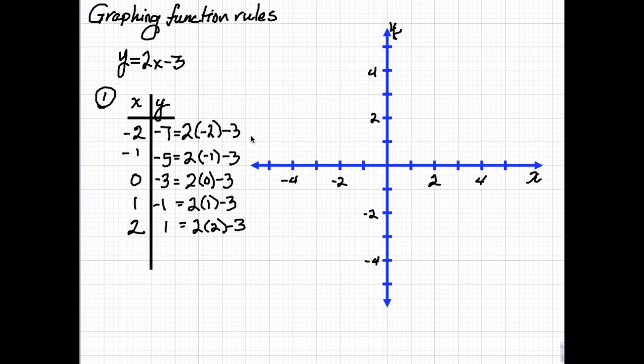Now, we did all these by hand, and sometimes you have to do that, but this could also be done on a calculator. Now, let's make the graph. We'll notice that the point negative 2, negative 7 kind of falls off the graph, so we won't graph that right now. Let's just graph the ones that fit.